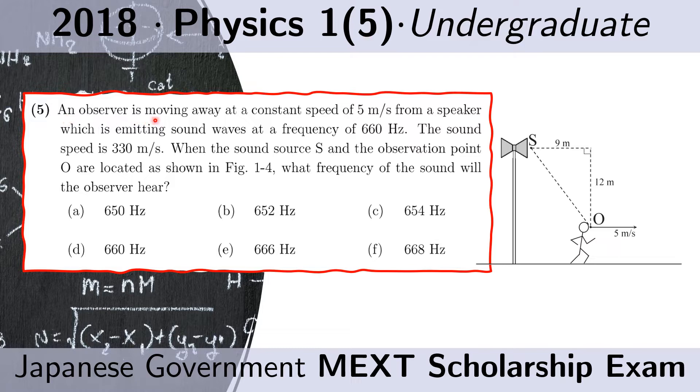An observer is moving away at a constant speed of 5 meters per second from a speaker which is emitting sound waves at a frequency of 660 Hz. The sound speed is 330 meters per second. When the sound source S and the observation point O are located as in this figure, what frequency of the sound will the observer hear?